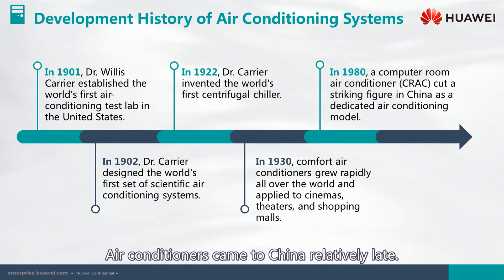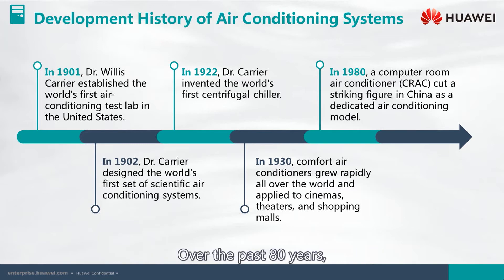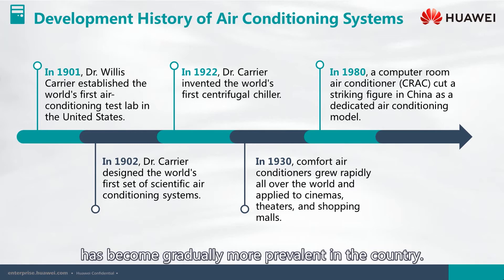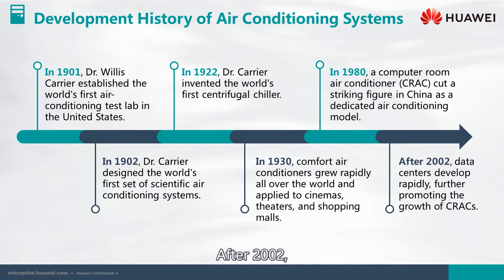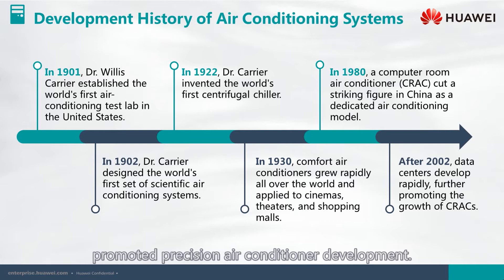Air conditioners came to China relatively late. Over the past 80 years, air conditioning has become gradually more prevalent in the country. After 2002, a period of rapid data center growth promoted precision air conditioner development.